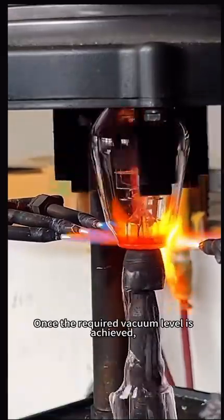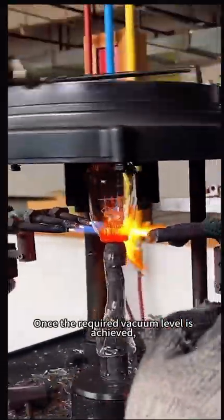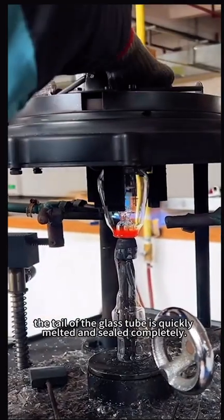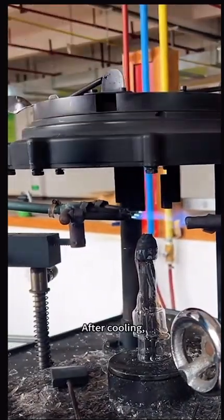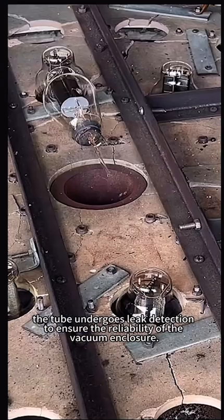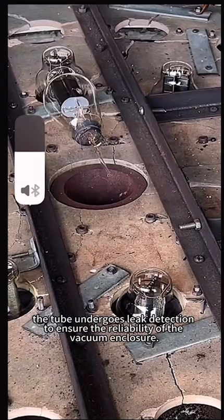Sealing and cooling. Once the required vacuum level is achieved, the tail of the glass tube is quickly melted and sealed completely. After cooling, the tube undergoes leak detection to ensure the reliability of the vacuum enclosure.